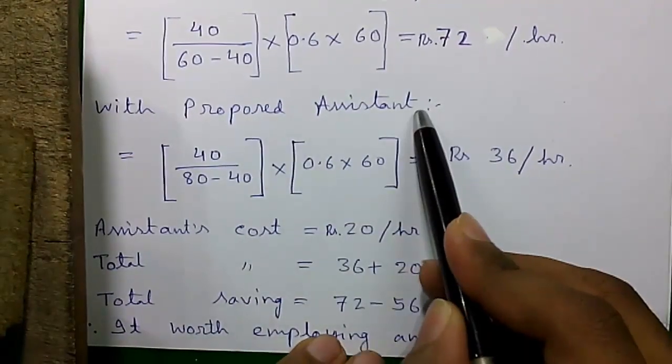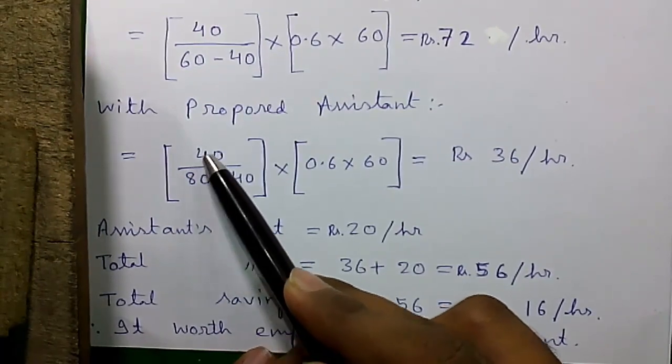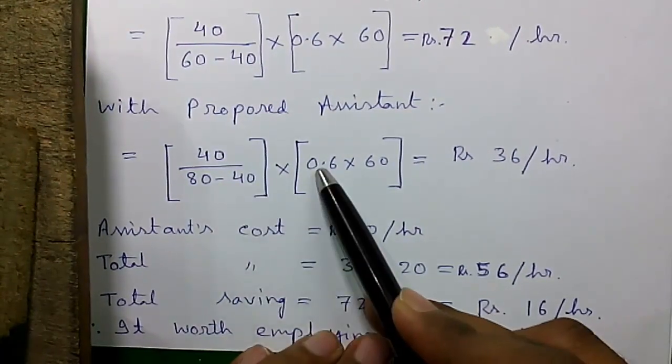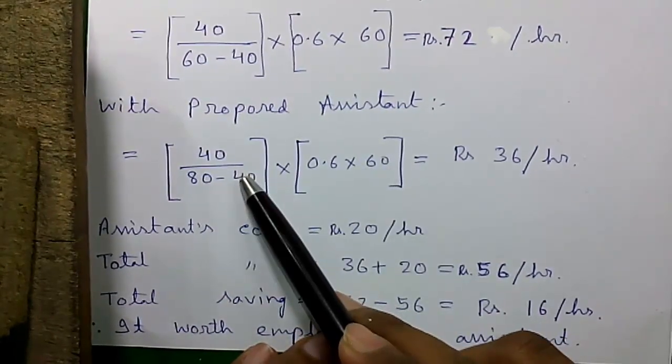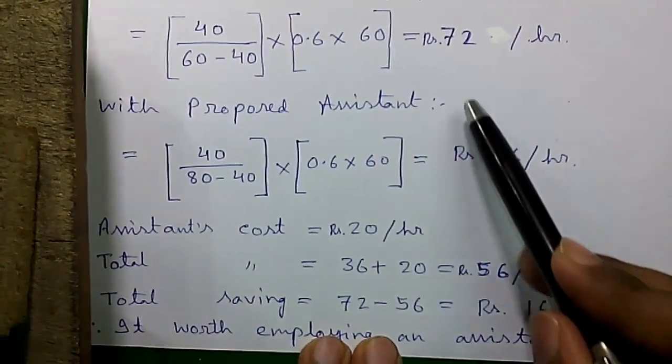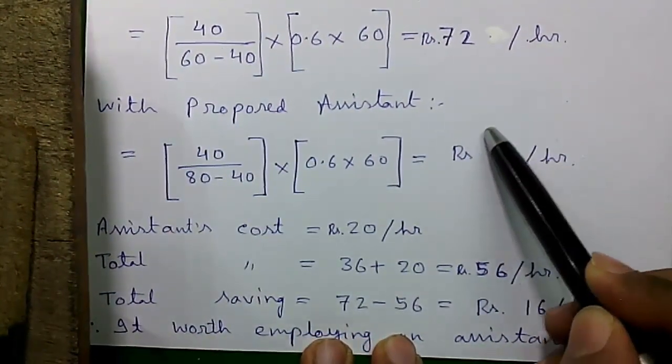Now with proposed assistant, after employing the assistant the capacity will increase to 80. So it will become 40 divided by 80 minus 40 times 0.6 times 60. So it will become Rs. 36 per hour. You can see after employing the assistant the waiting cost reduces to half.